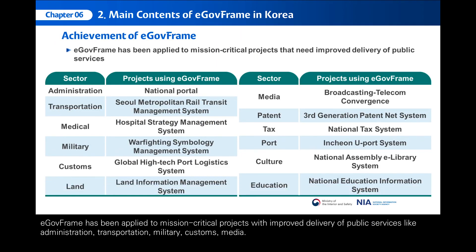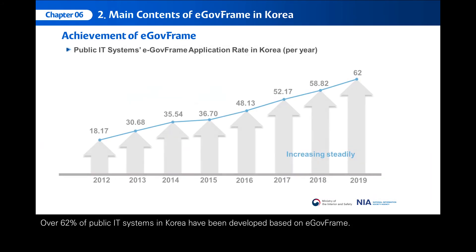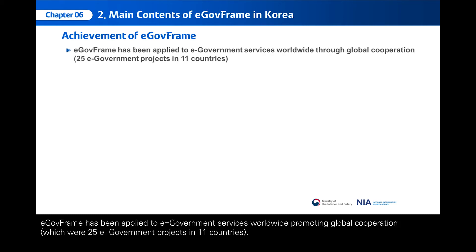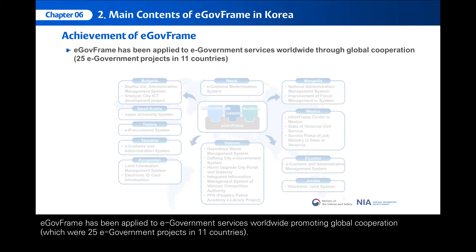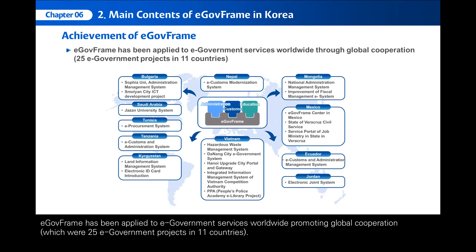E-GovFrame has been applied to mission-critical projects with improved delivery of public services like administration, transportation, military, customs, and media. Over 62% of public IT systems in Korea have been developed based on E-GovFrame. E-GovFrame has been applied to e-government services worldwide, promoting global cooperation, which includes 25 e-government projects in 11 countries.